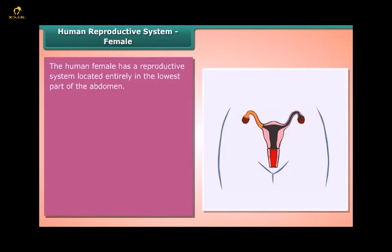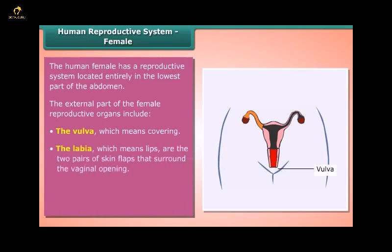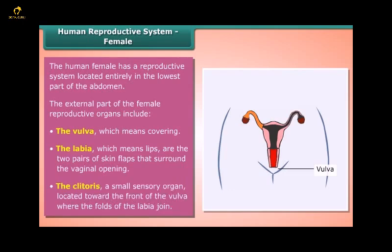Human Reproductive System – Female: The human female reproductive system is located entirely in the lowest part of the abdomen. The external parts include the vulva, meaning 'covering,' and the labia, meaning 'lips,' which are the two pairs of skin flaps surrounding the vaginal opening. The clitoris is a small sensory organ located toward the front of the vulva where the folds of the labia join.